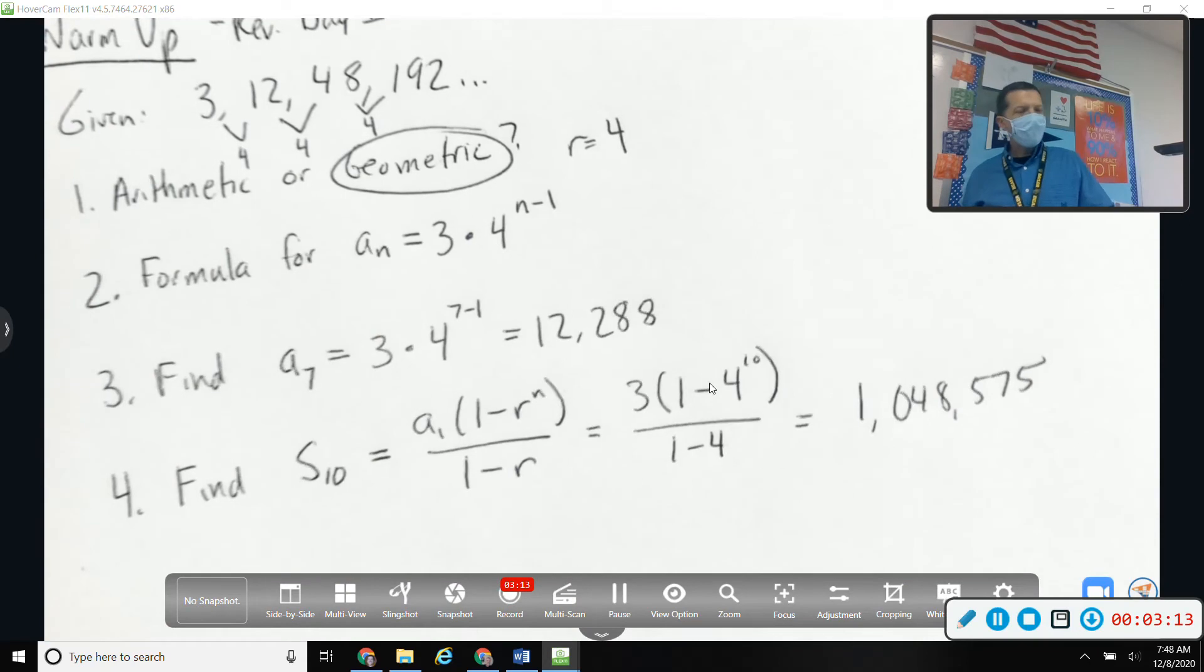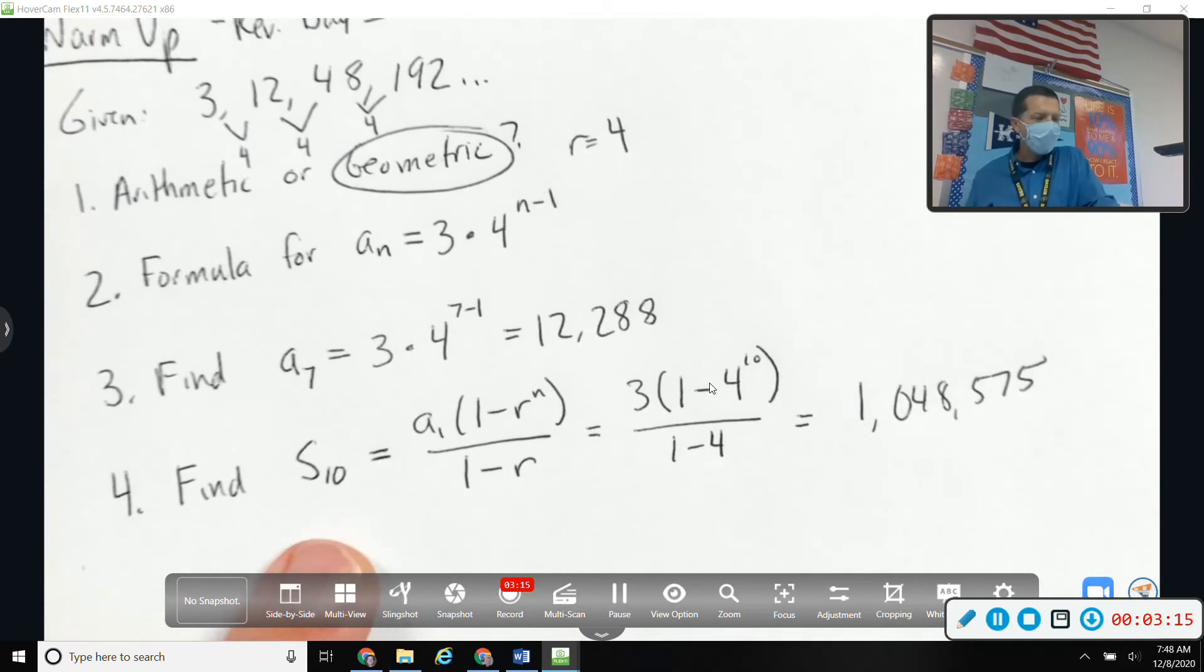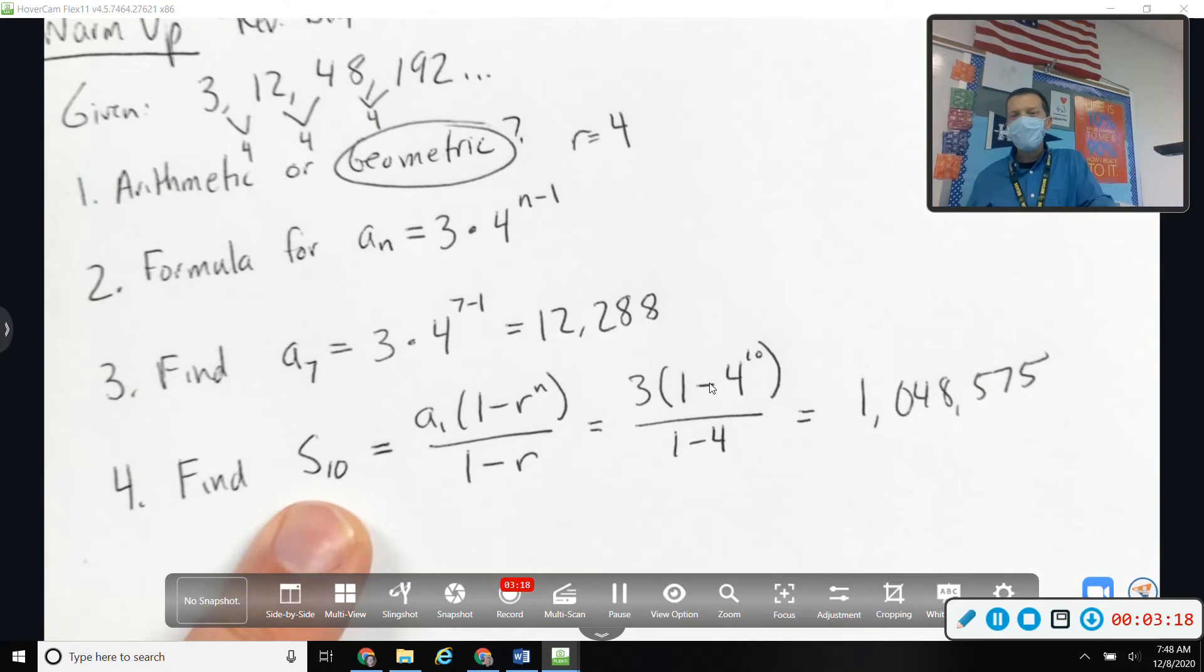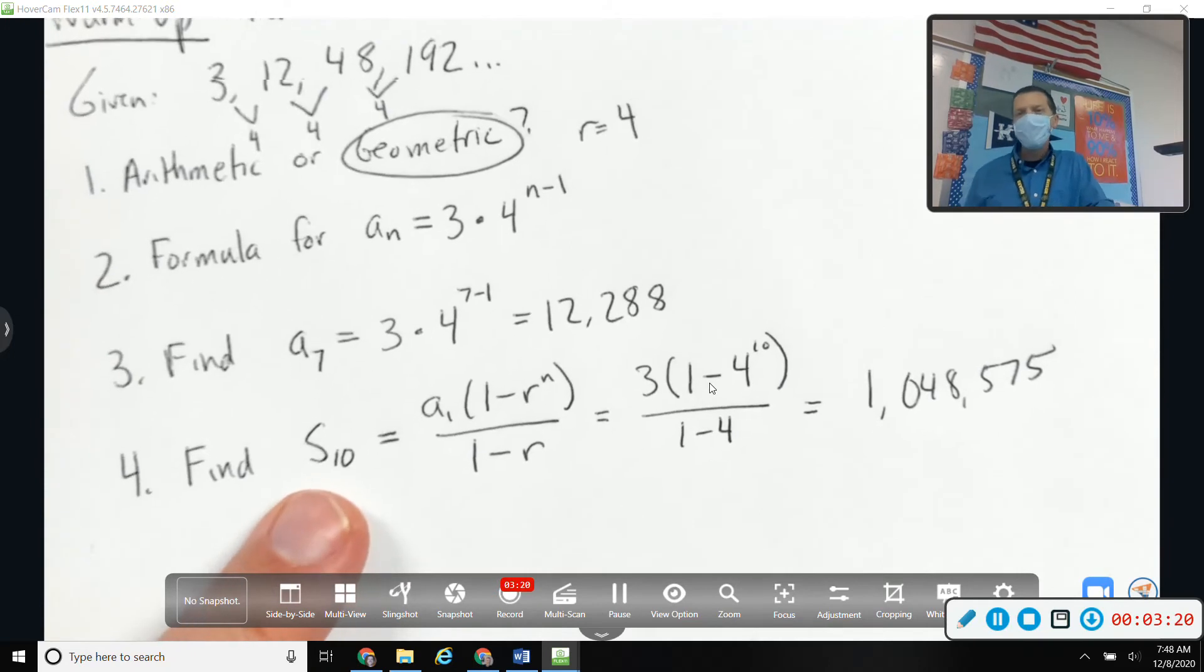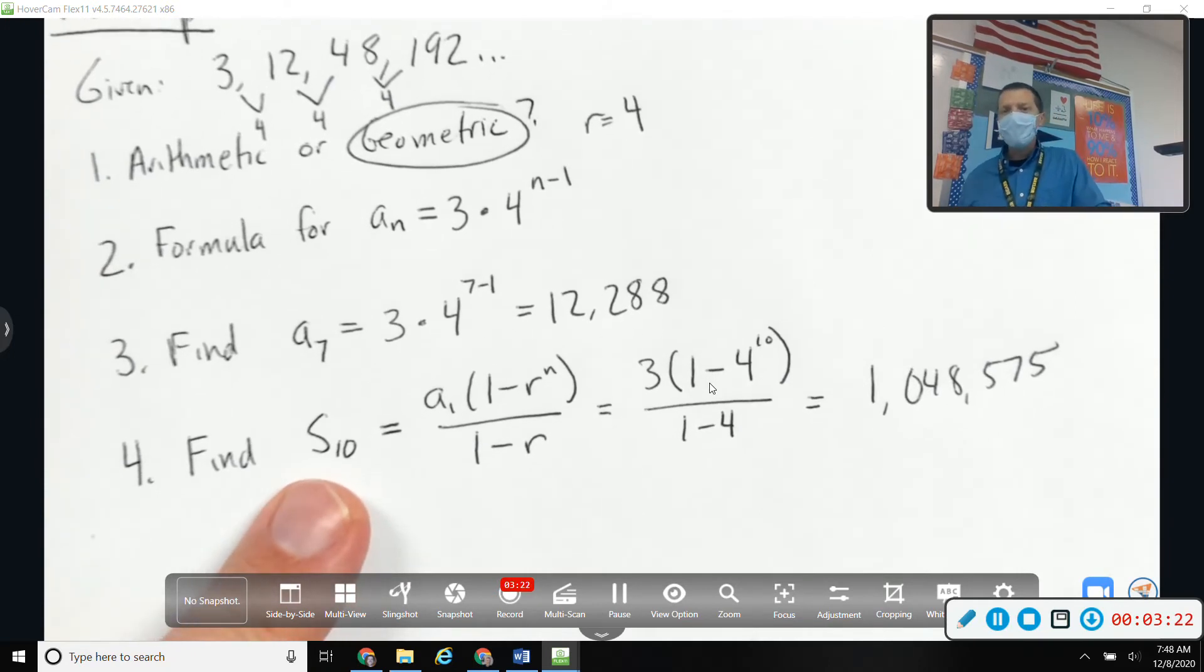Huge number, but think about what we did. We're multiplying by four ten times, so that's going to get really really big, and then we add up all those numbers. So it makes sense that we'd have a big number there.